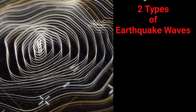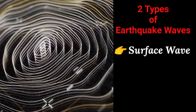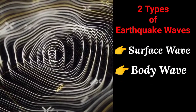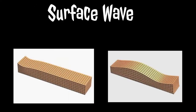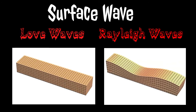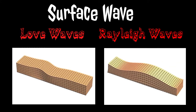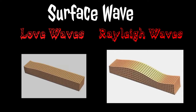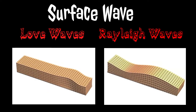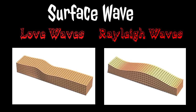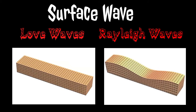There are two types of earthquake waves: surface waves and body waves. Surface waves have two forms — love waves and Rayleigh waves. These two travel only on the surface of the earth, and over time their velocity decreases. They cause most of the environmental damage.